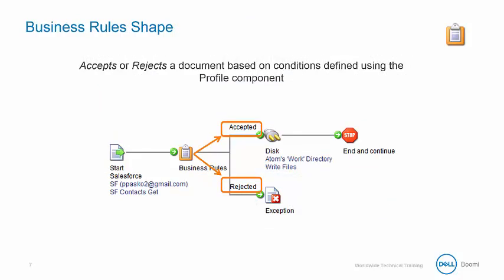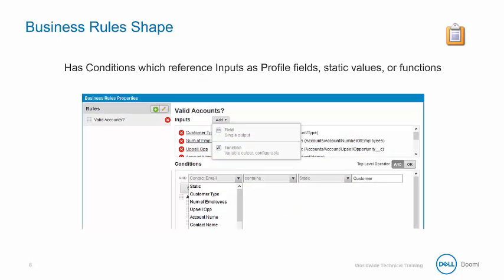The business rules shape accepts or rejects a document based on defined conditions within the profile component. Within the Business Rules Properties dialog, conditions reference inputs such as profile fields, static values, or functions. The conditions evaluated compare profile fields, static values, or functions that are defined above.